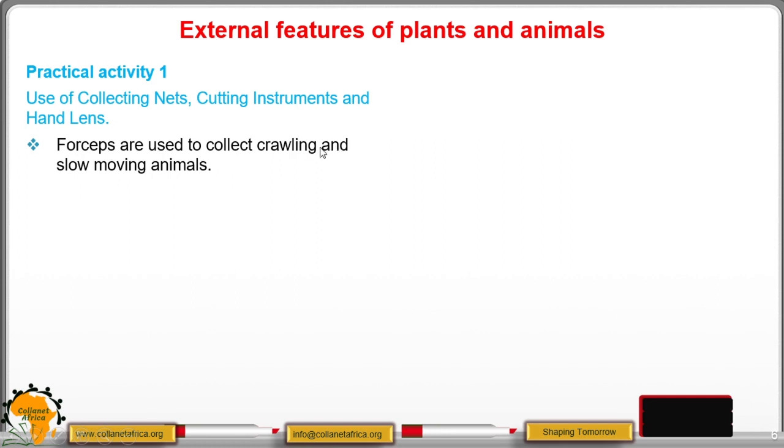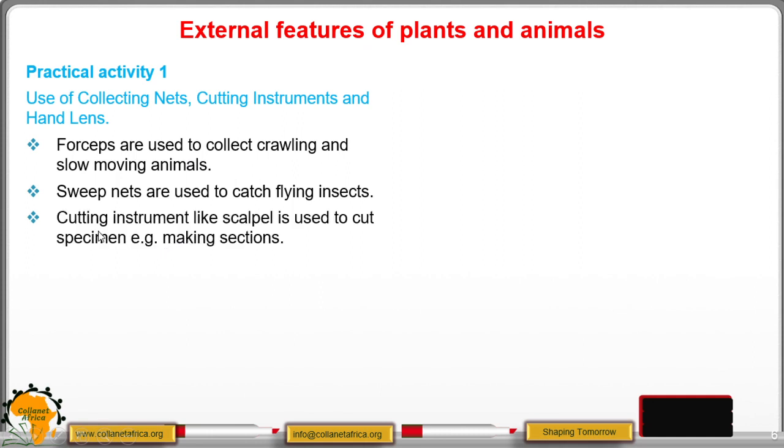Those organisms that crawl and are injurious, you do not just pick using your hand, you must have the aid of an instrument. Then the sweep nets are used to catch flying insects like bees, butterflies, grasshoppers, all those insects that fly.